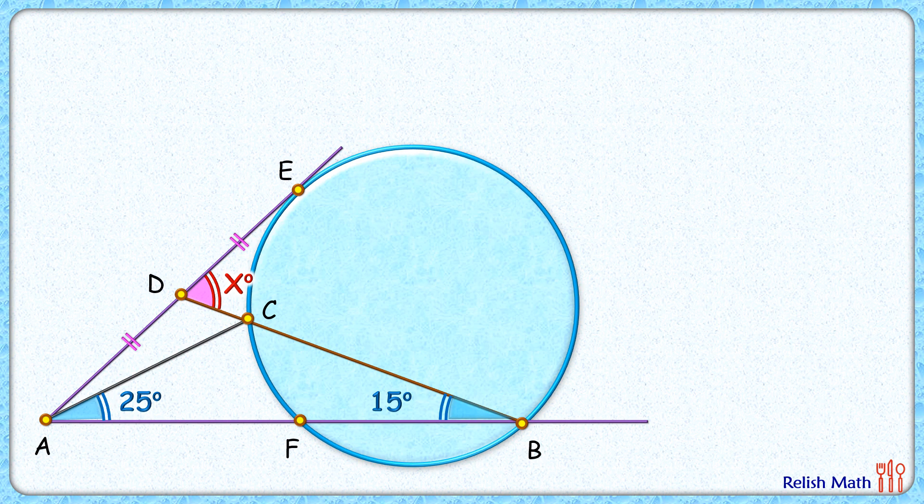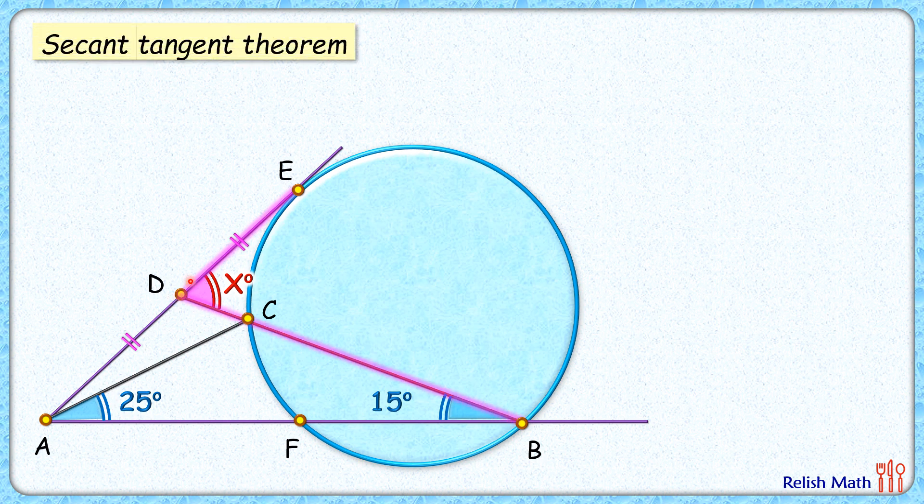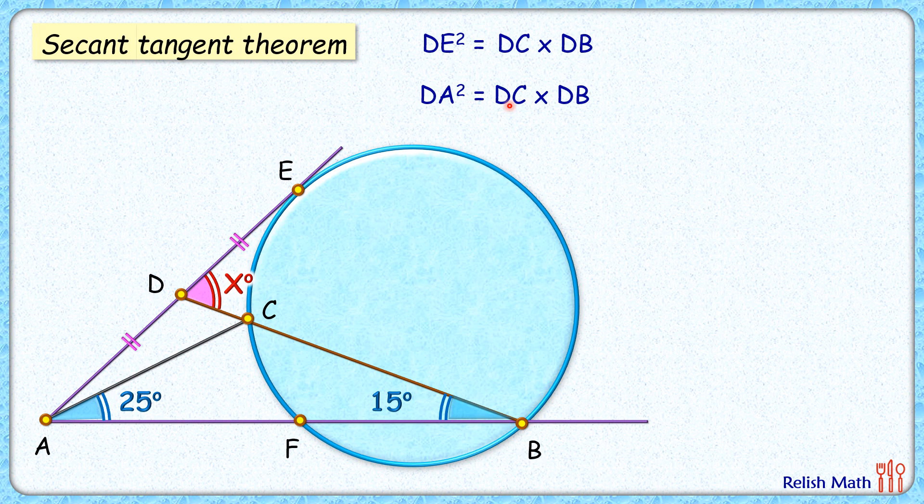Okay, let's check the solution. If you see from point D, we have DE is a tangent and DB is a secant. Applying the tangent-secant theorem, we get DE² = DC × DB. Now DE equals DA, so we get DA² = DC × DB. Let's take DC on the left side and one of the DA on the right side, so we get DA/DC = DB/DA.